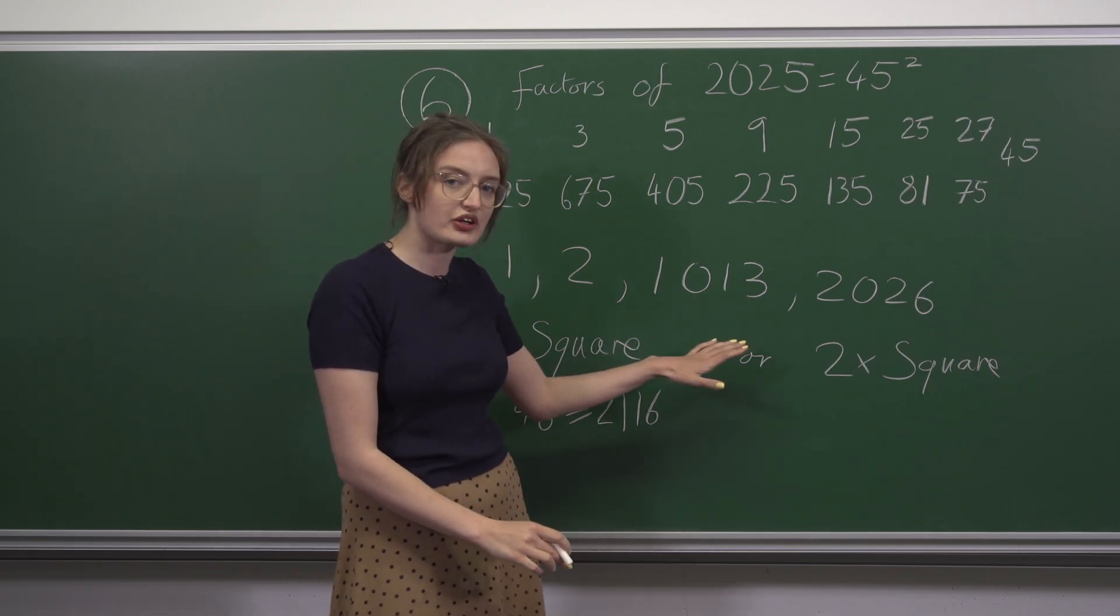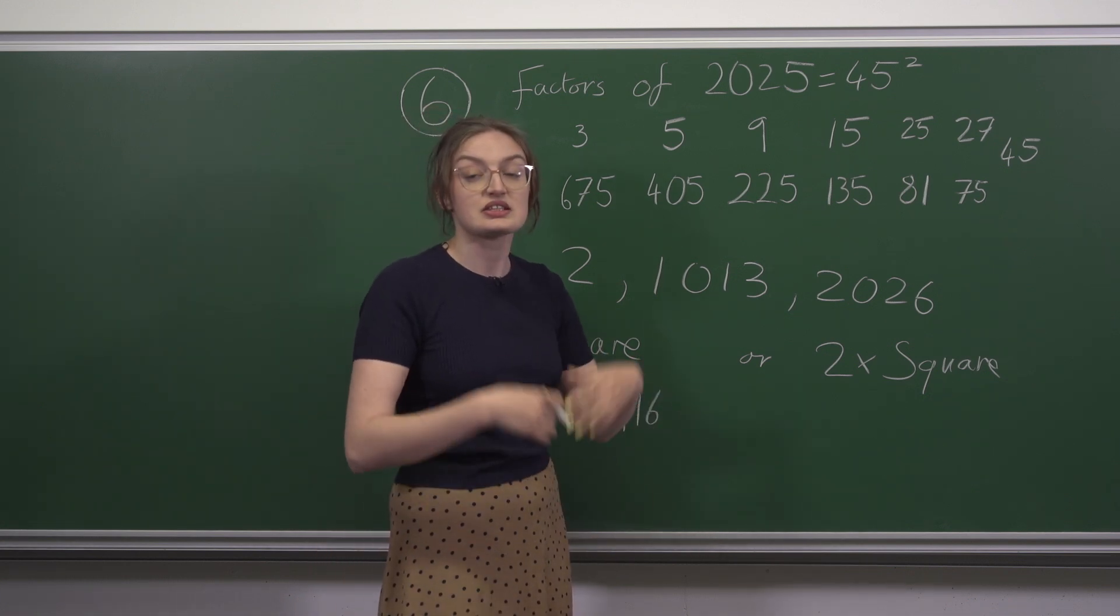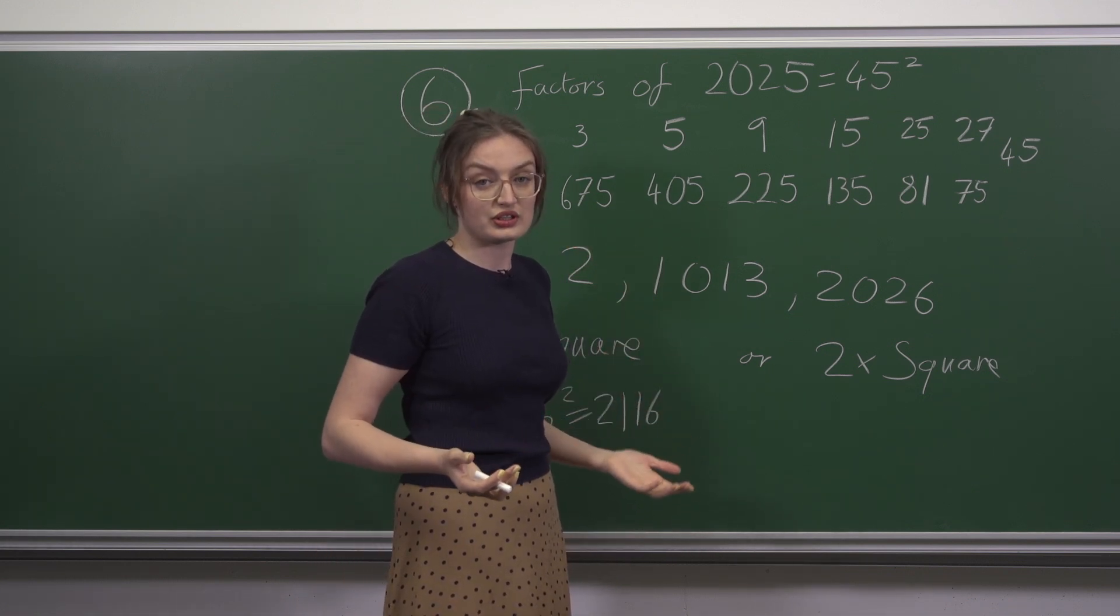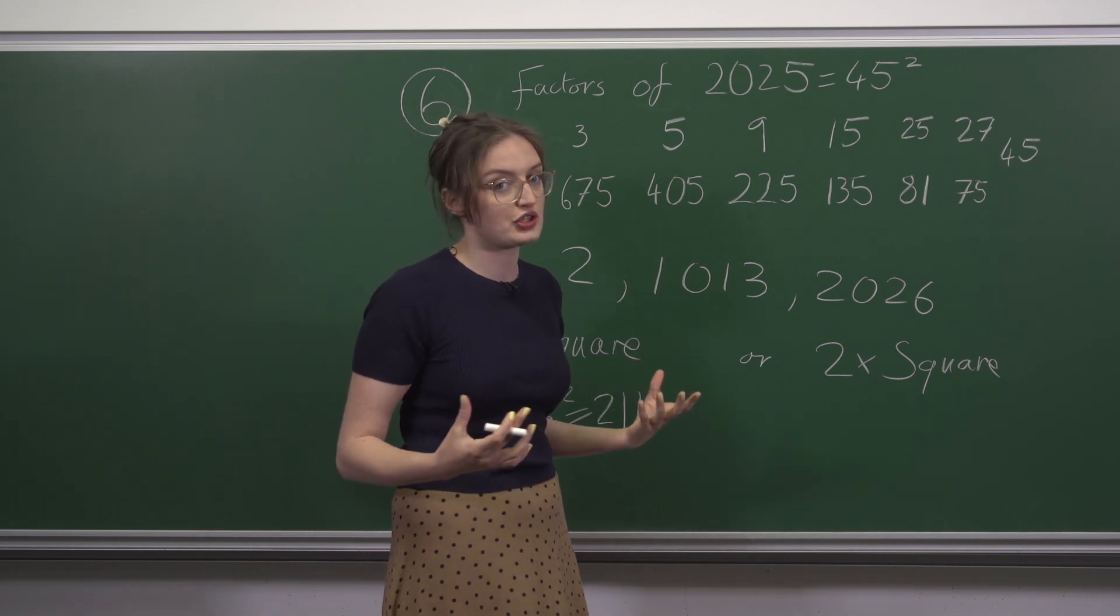But can we do better by looking for 2 times a square? Half of 2025 is 1012.5, so we're looking for a number bigger than 1013.